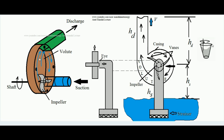The same thing happens in the centrifugal pump. There is a casing — this brown colored entity is the casing — and there is an impeller inside it. The impeller rotates inside the casing about some axis, connected to a shaft, and rotary power is supplied to this impeller by the help of an electric motor. Generally an electric motor is used to run the impeller of a centrifugal pump.